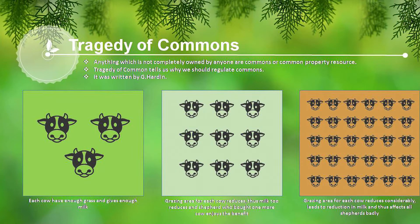Coming to the theory behind the need for environmental planning, this is known as the Tragedy of Commons. The Tragedy of Commons is a problem in economics that occurs when individuals neglect the well-being of society in the pursuit of personal gain. This leads to over-consumption and ultimately depletion of the common resource to everybody's detriment.